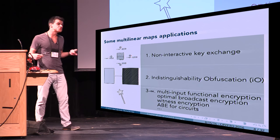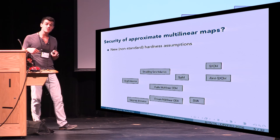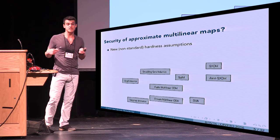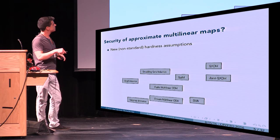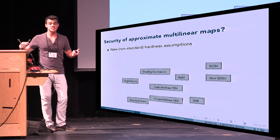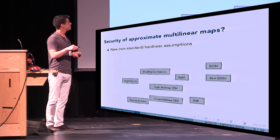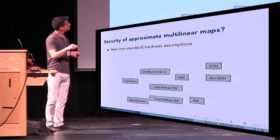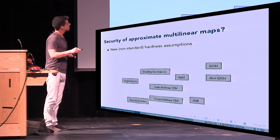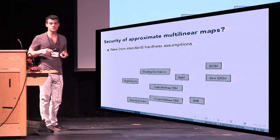If we look at the candidates we currently have for approximate multilinear maps, they are unfortunately based on new hardness assumptions that are not standard. You have assumptions like multilinear DDH — a generalization of DDH in a public setting — decision linear problems, subgroup membership, and other problems used to construct I.O., such as graded set induction assumptions, subgroup elimination, and graph induction.